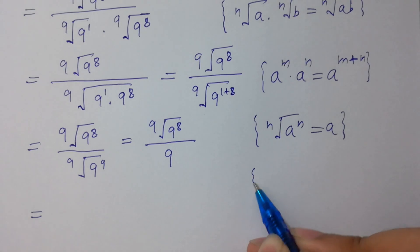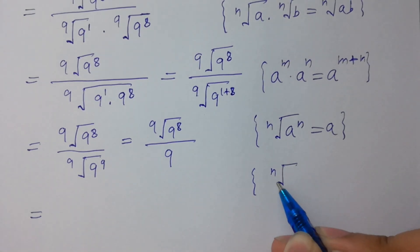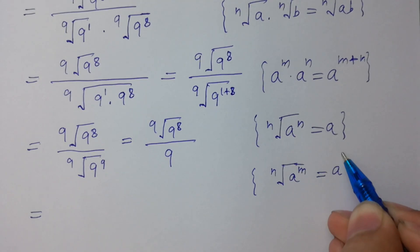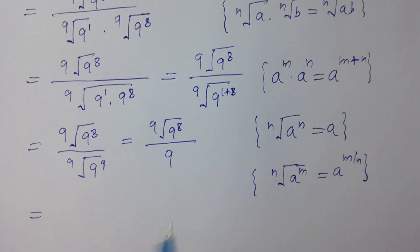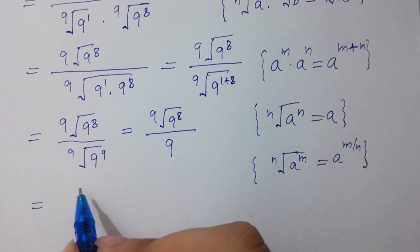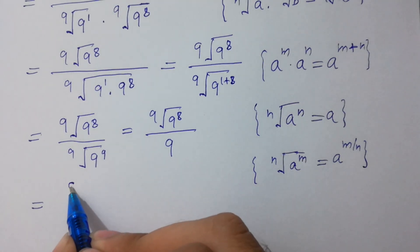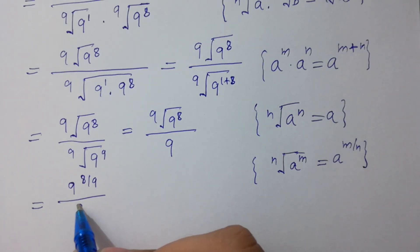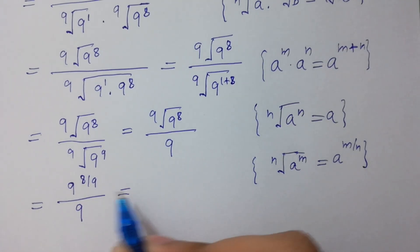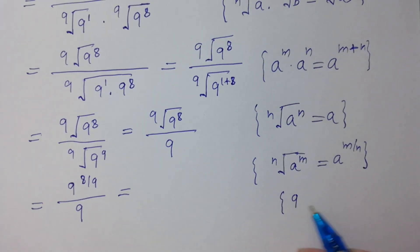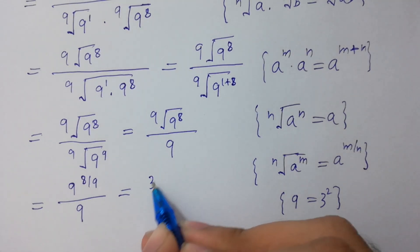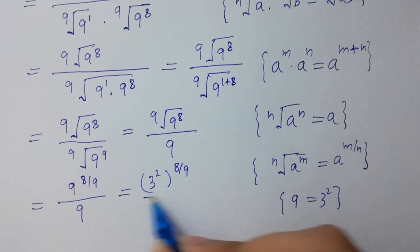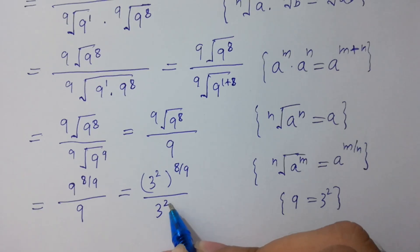Next, since n-th root of a to the power m equals a to the power m over n, so 9th root of 9 to the power 8 equals 9 to the power 8 over 9. And since 9 equals 3 squared, so 3 squared to the power 8 over 9, divided by 9. Got it?